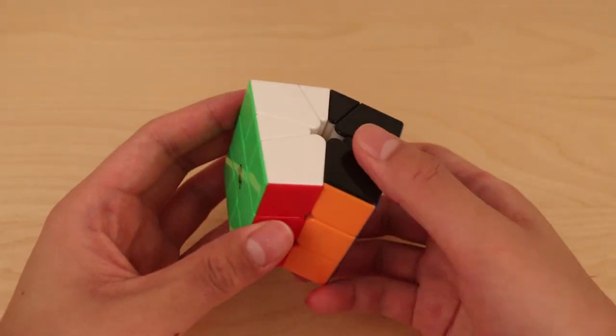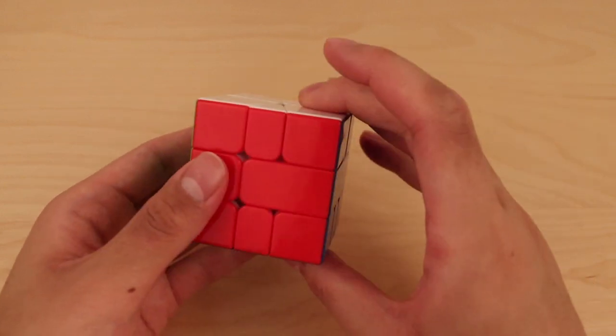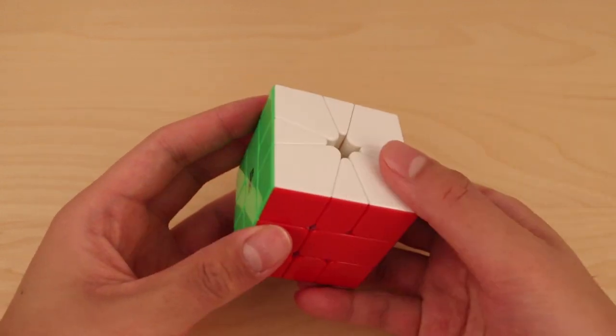So for all your algorithms, make sure you're turning like this the whole way, unless you run into a really rare instance where re-gripping might be a bit better.